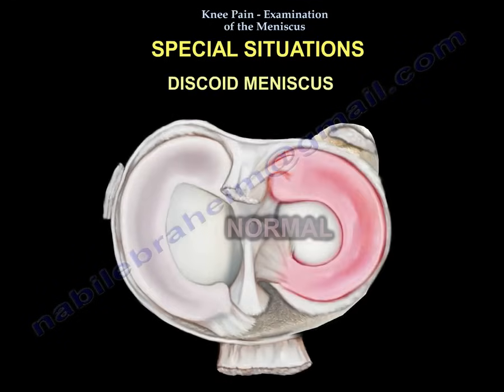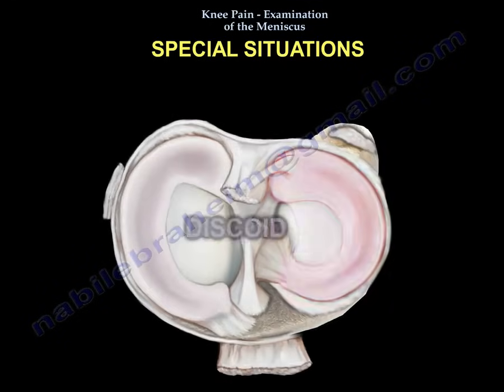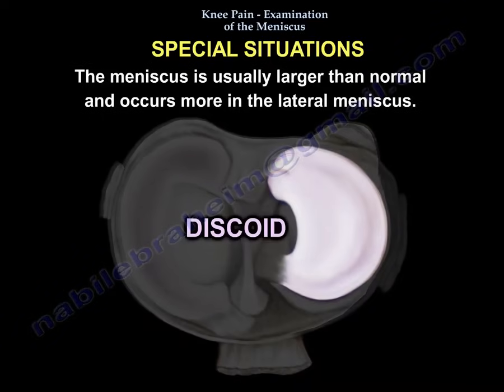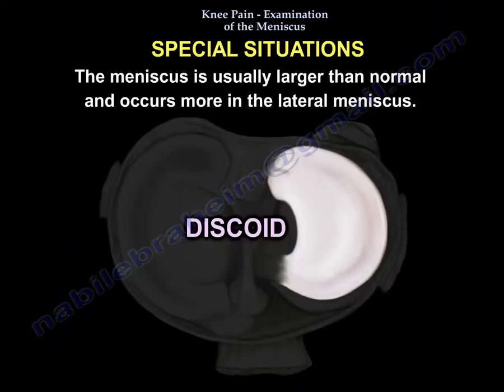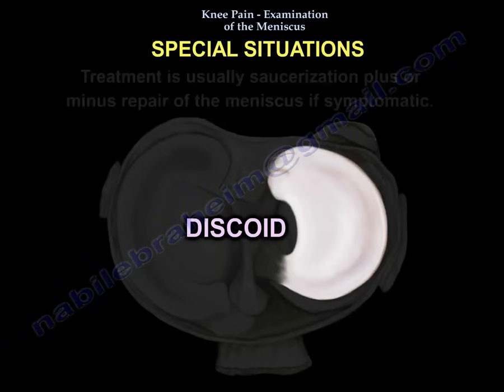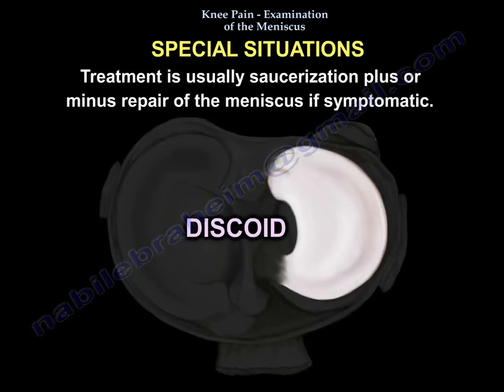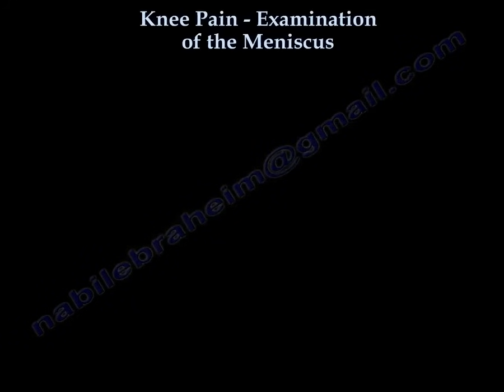Discoid meniscus is usually larger than normal and occurs mostly in the lateral meniscus. The treatment is sclerization plus or minus repair of the meniscus if symptomatic. Thank you for listening — I hope you enjoyed that video.